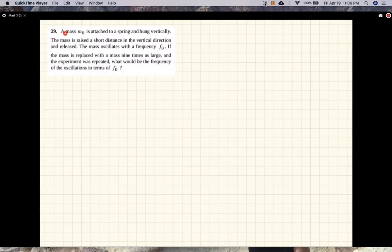Okay, so this problem says a mass M₀ is attached to a spring and hung vertically. The mass is raised a short distance in the vertical direction and released. The mass oscillates with frequency f. Now if this mass is replaced with a mass nine times as large and the experiment is repeated, what would be the frequency of oscillation in terms of f? Okay, so we've got a mass...